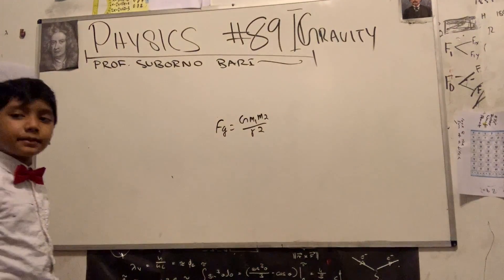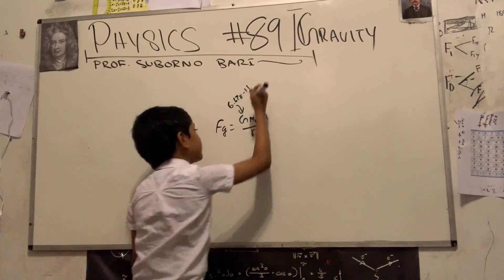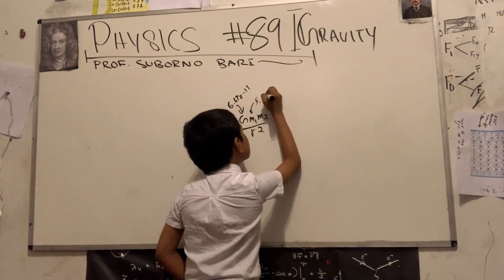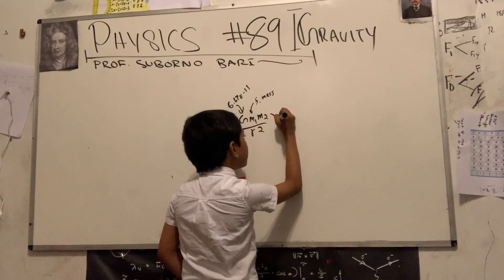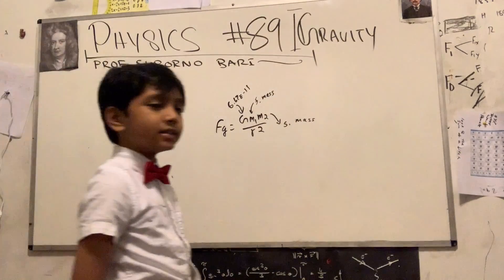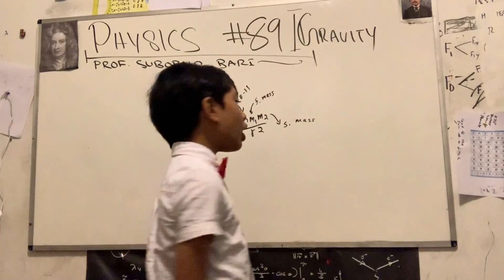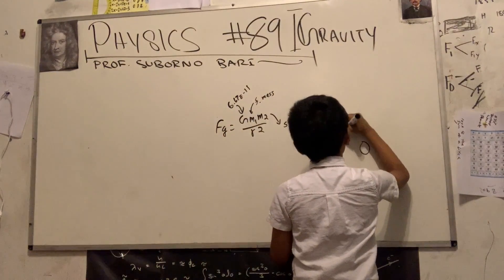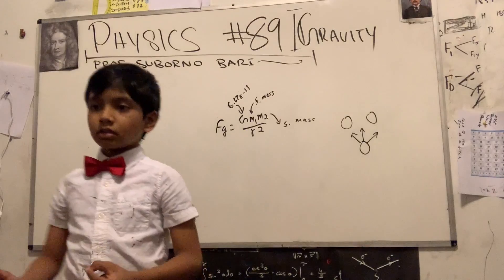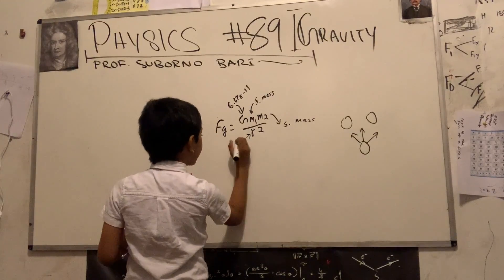So let's discuss each part of this equation. So G, as we all know, is 6.67 times 10 raised to the negative 11th power. And then, m₁ is going to be our first mass, and m₂ is going to be our second mass. And R is how far away they are from each other.